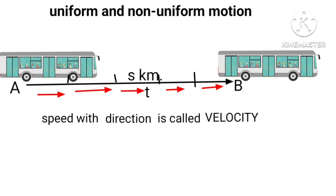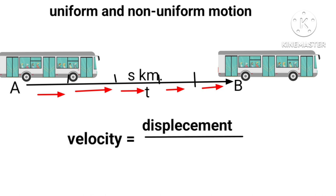Whereas speed with direction is called velocity. SI unit is meter and is a vector quantity. Velocity equals displacement upon time taken.